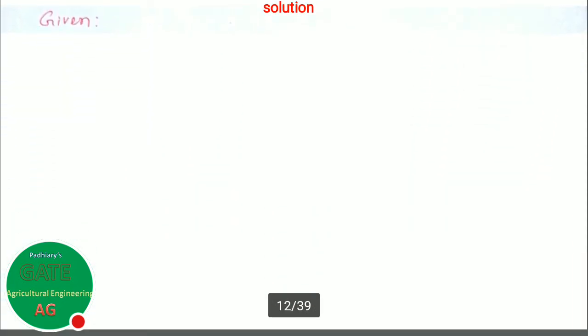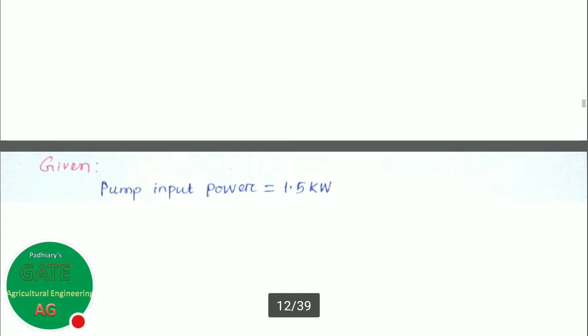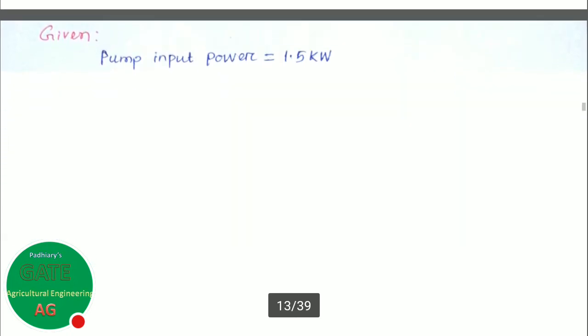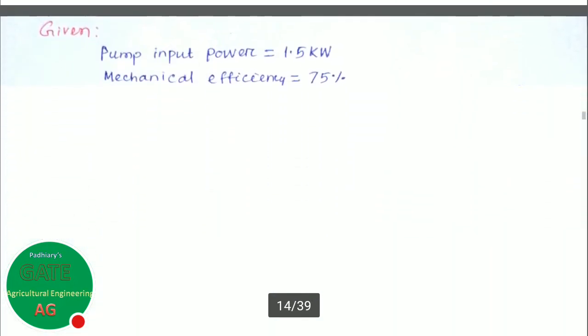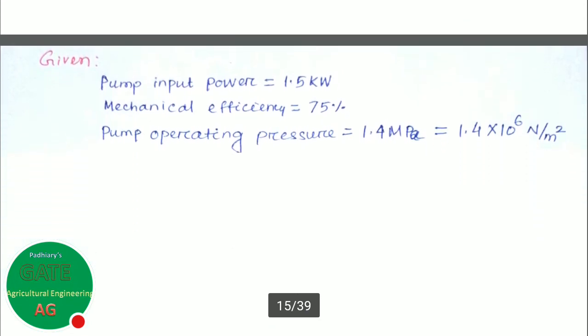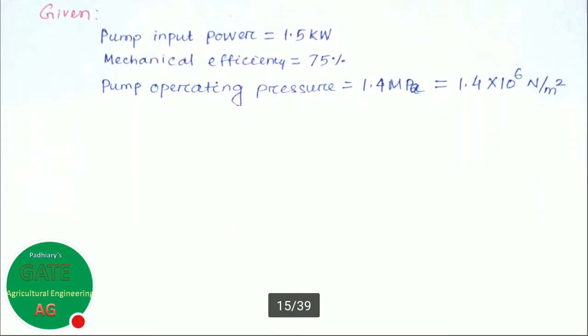Given: pump input power is 1.5 kW, mechanical efficiency is 75%, pump operating pressure is 1.4 MPa, that is 1.4×10⁶ N per meter square. Since we have to find out the velocity in meter per second, let us keep everything in meters. Here MPa is 10 to the power of 6 N per meter square.